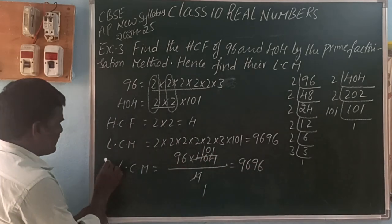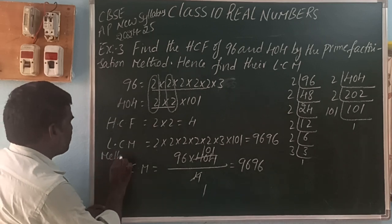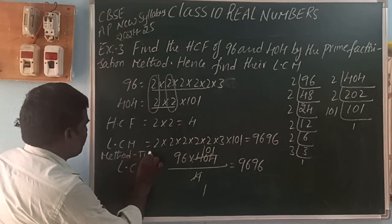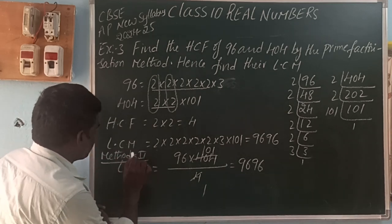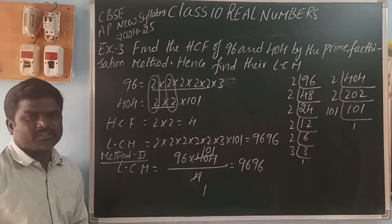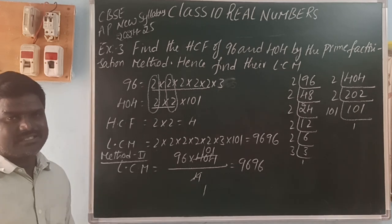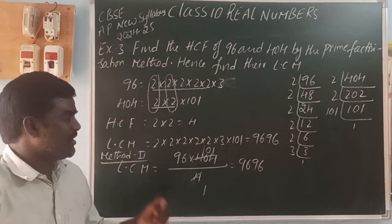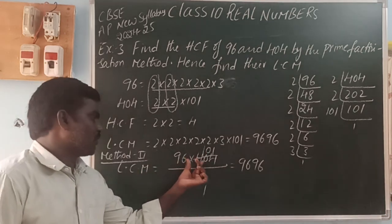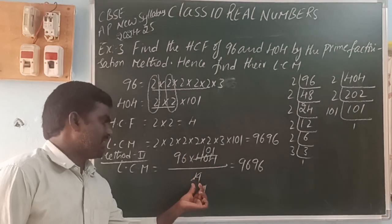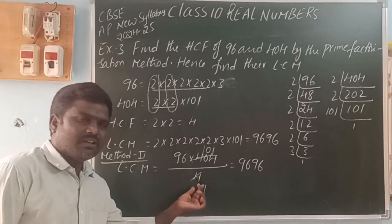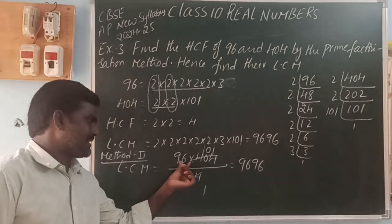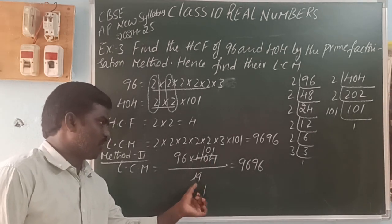This is another method to find LCM. The formula is: Product of two numbers is equal to the product of their HCF and LCM. If two numbers and HCF are given, you can find LCM as (product of the two numbers) divided by HCF.